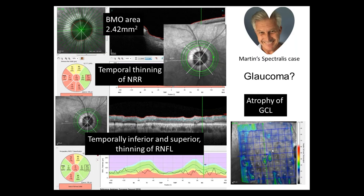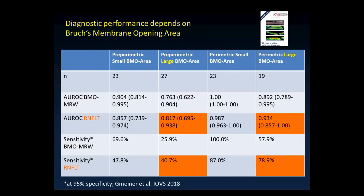We found a discrepancy between RNFL flagging and BMO-MRW flagging. A 2018 IOVS paper showed that in pre-perimetric patients with small versus very large BMO areas, minimum rim width is slightly more sensitive in small discs, while in large discs the RNFL is slightly more sensitive. So depending on disc size and form there may be a discrepancy in flagging glaucoma between minimum rim width and retinal nerve fiber layer — therefore I always prefer to also look at ganglion cell layer thickness.